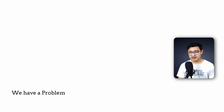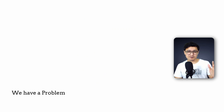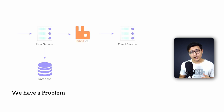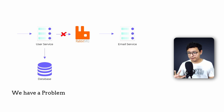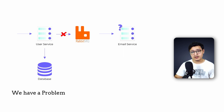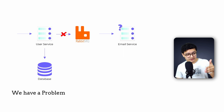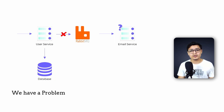There's still a big problem lurking in the write paths of both designs. What would happen if the user service adds the user in the database but fails before it can publish a message or make the API call? The email would never be sent at all, and if this was a mission-critical part of your application, it would turn out to be a disaster.